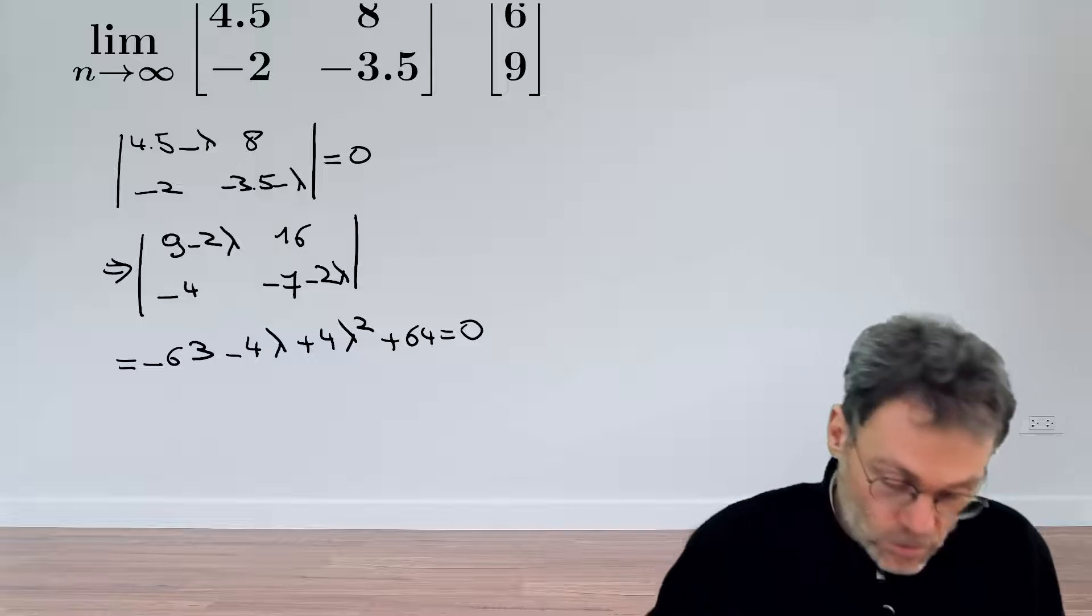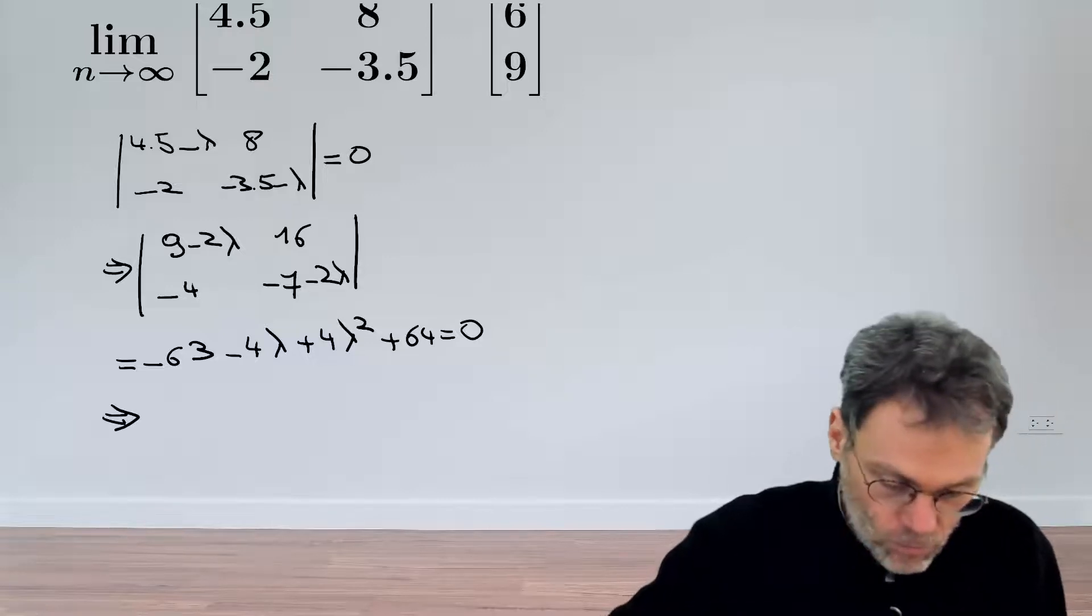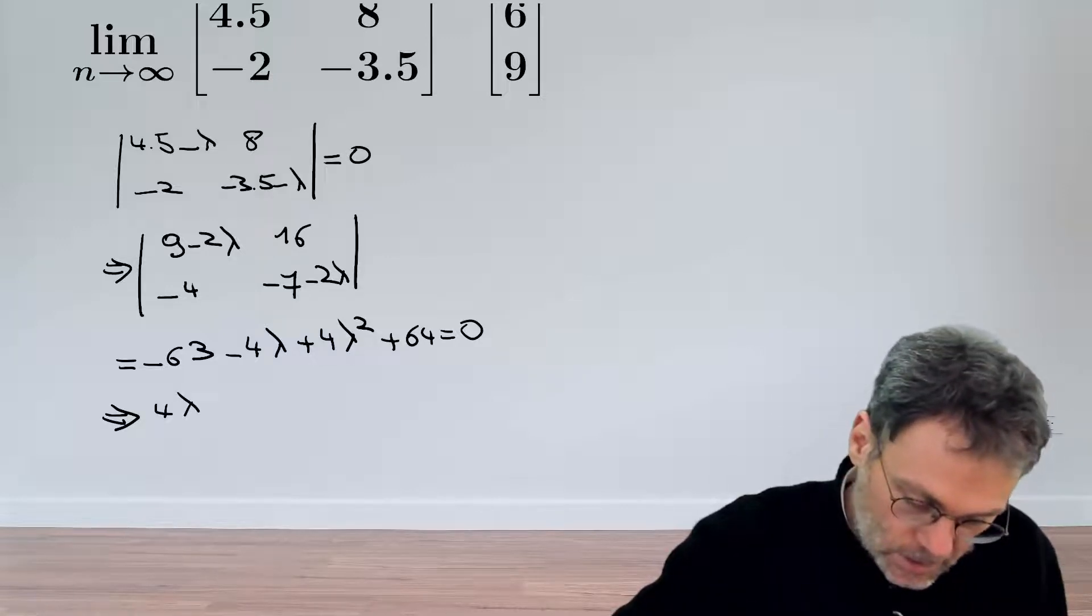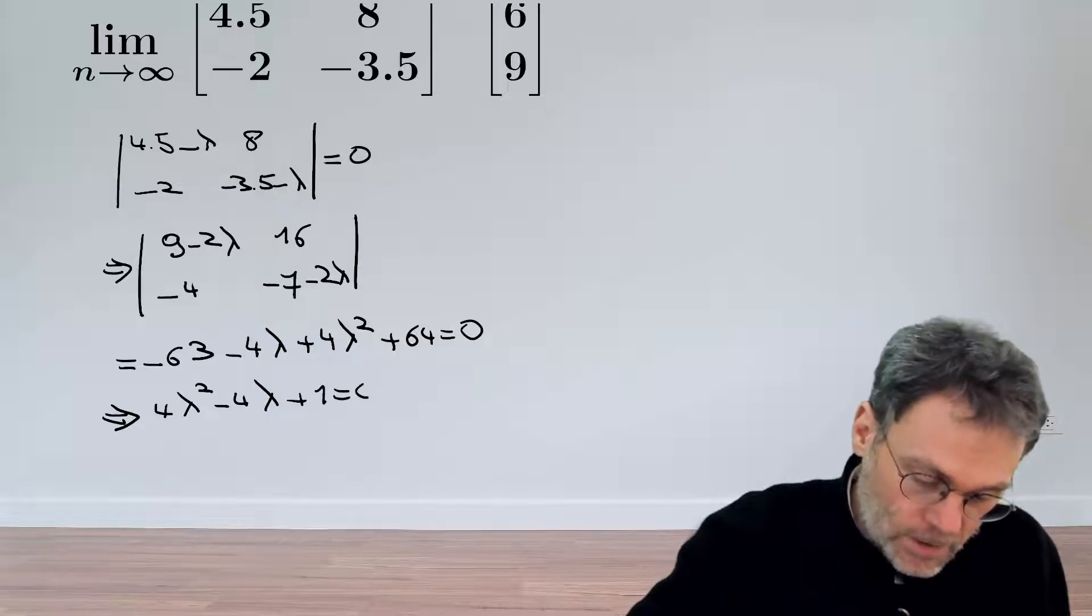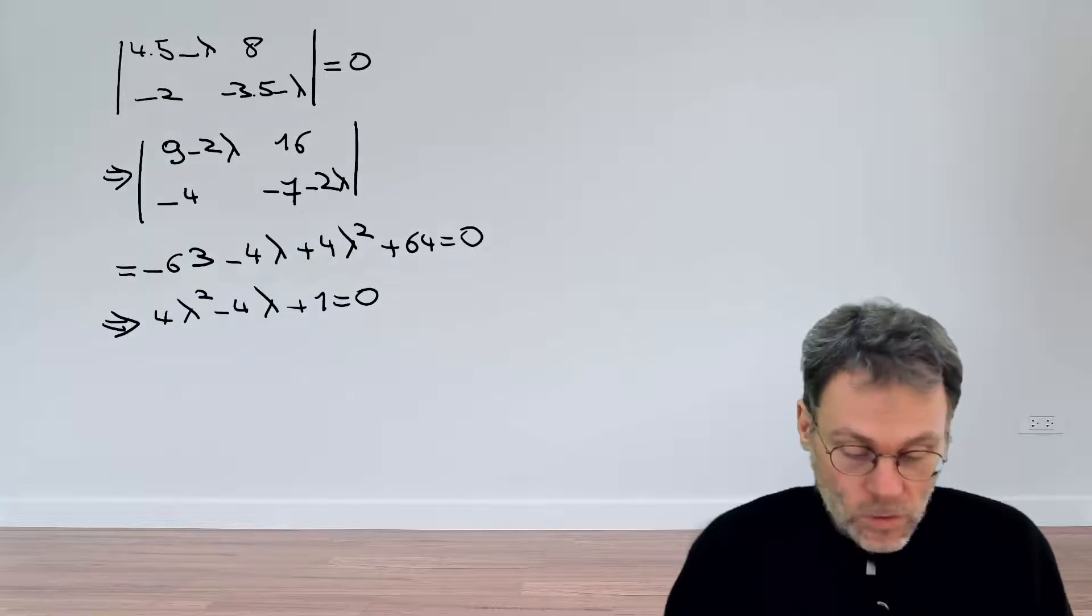And this thing should be equal to 0, so if we rewrite it a little bit, then we have 4λ squared minus 4λ plus 1 should be equal to 0.